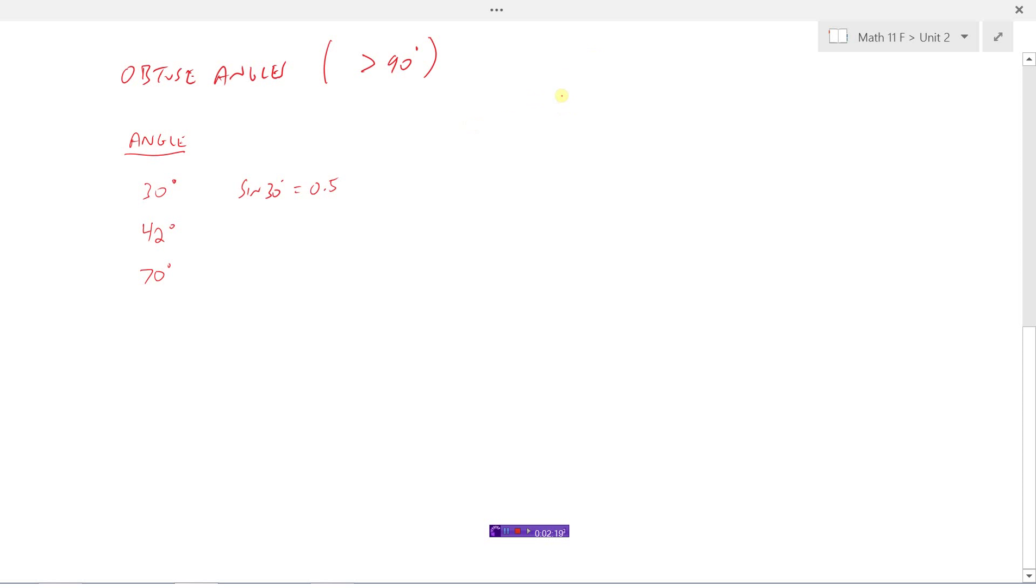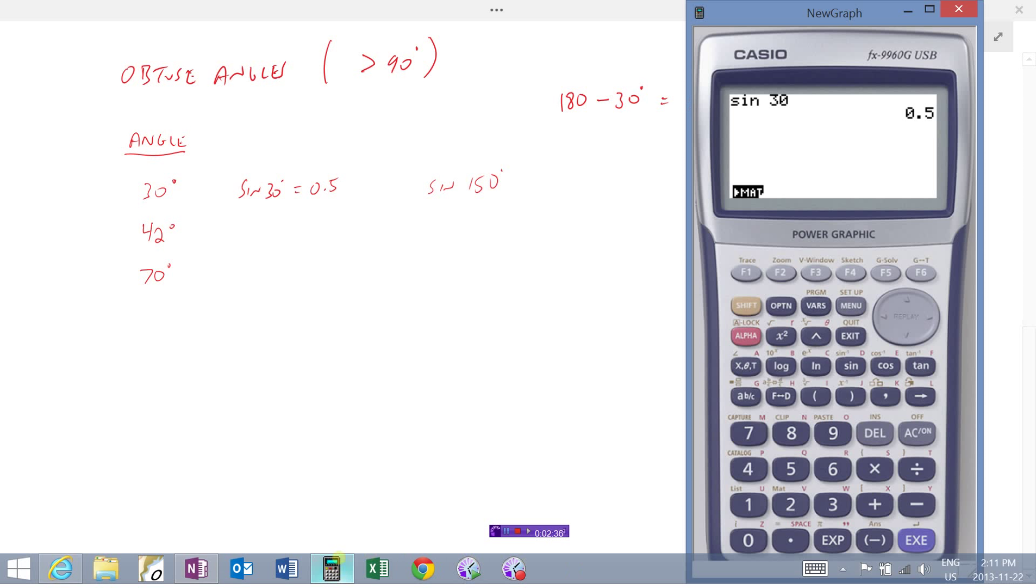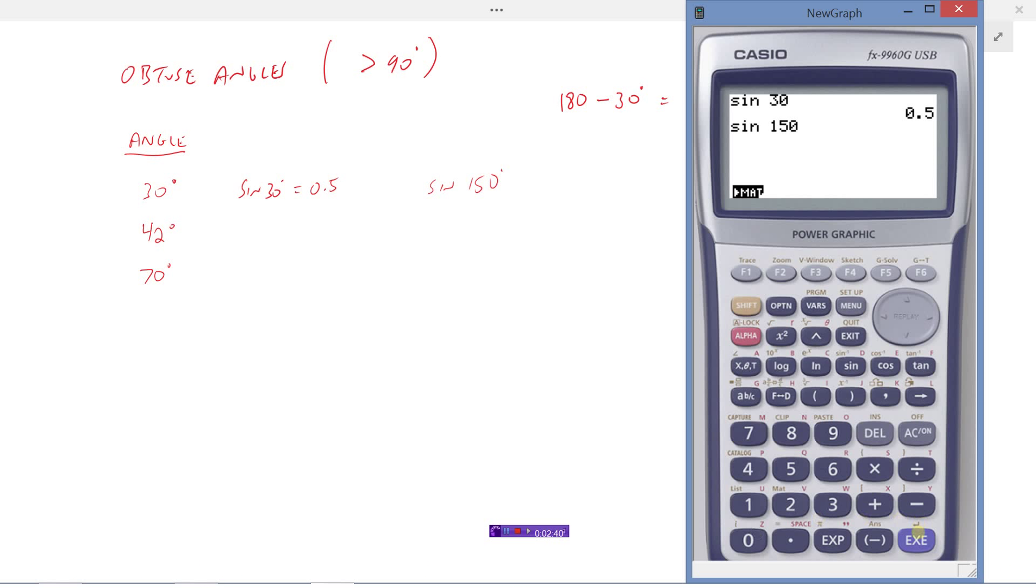Check out what happens when I take 180 and minus that 30 degrees. If I take 180 and minus this angle, I'm going to get 150 degrees, which now is an obtuse angle. Check this out. Watch when I go sine of 150. Look, see that? I get the exact same ratio, 0.5.